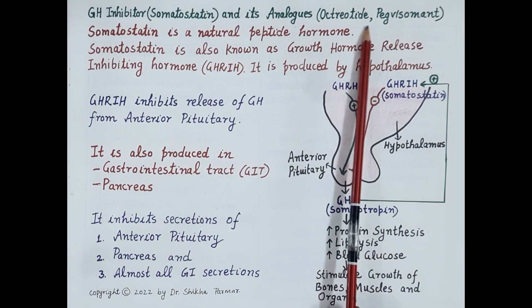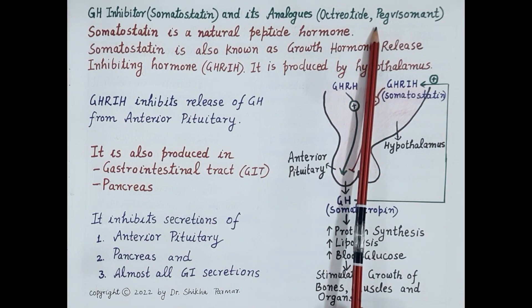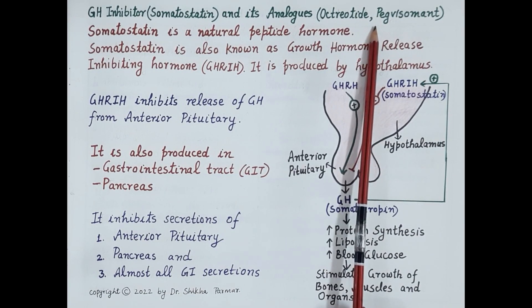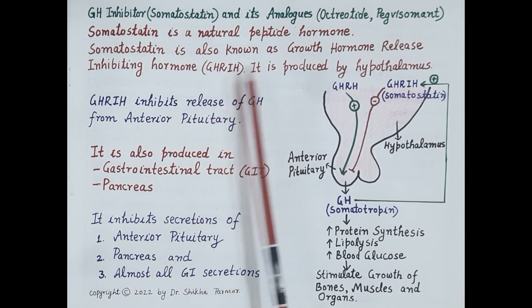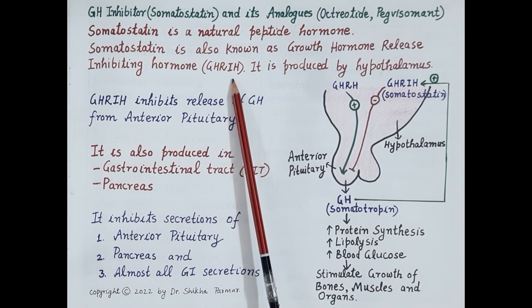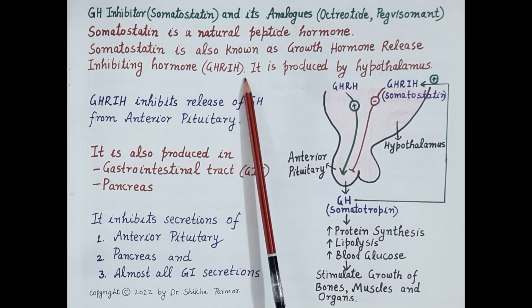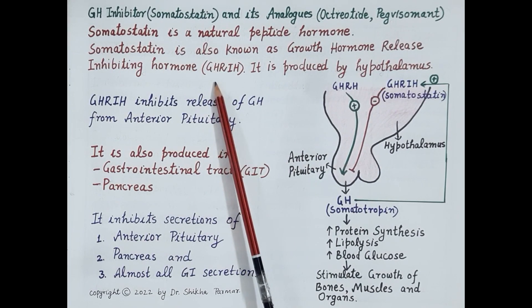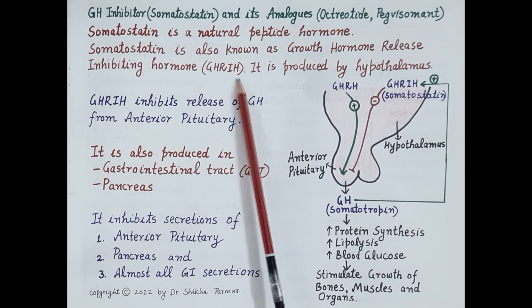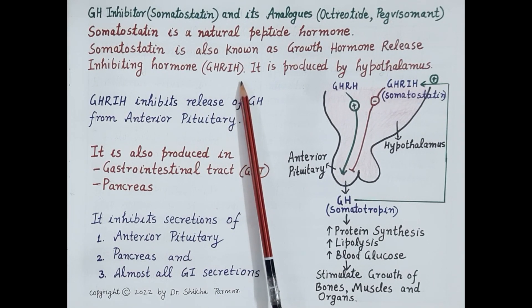These analogues are not natural but are synthesized and are identical to somatostatin in physiological actions. Somatostatin is also called growth hormone release inhibiting hormone, in short GHRIH, and is produced and released from the hypothalamus. As the name suggests, it inhibits the release of growth hormone from the anterior pituitary.